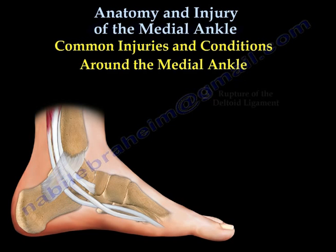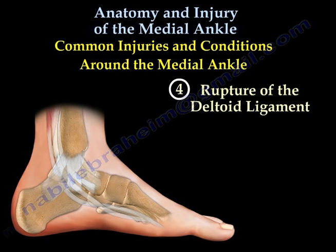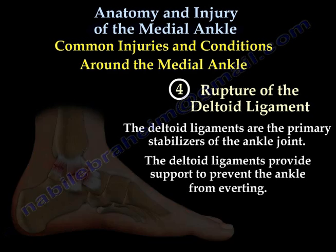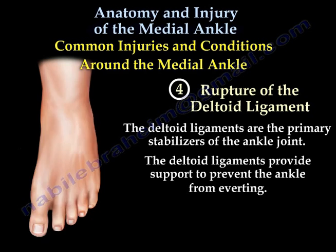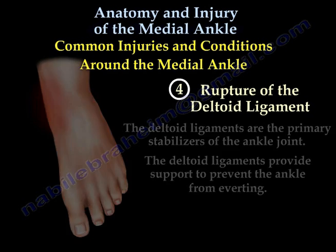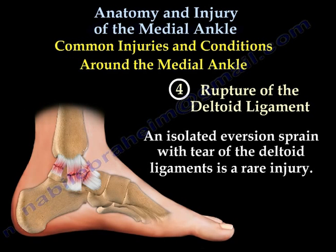The final condition is rupture of the deltoid ligament. The deltoid ligaments are the primary stabilizers of the ankle joint and provide support to prevent the ankle from everting. An isolated eversion sprain with tear of the deltoid ligaments is a rare injury.